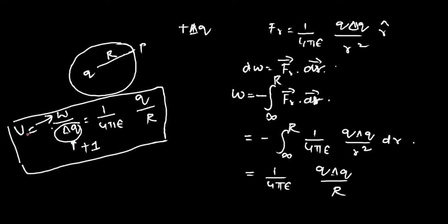Electric potential can also be defined as work per unit charge at that point P: W/1. Mathematically it can be calculated as V = (1/4πε)(q/R). You don't see any r-hat here, which confirms that electric potential is a scalar quantity — unlike electric field strength which is a vector quantity. So this is one way of finding out the potential at point P due to charge q at distance R.